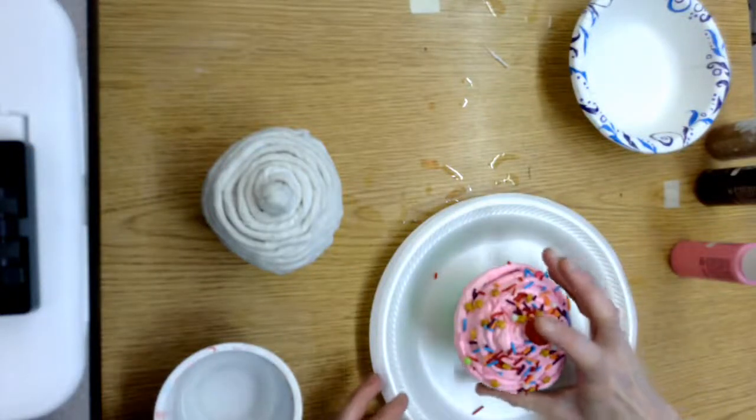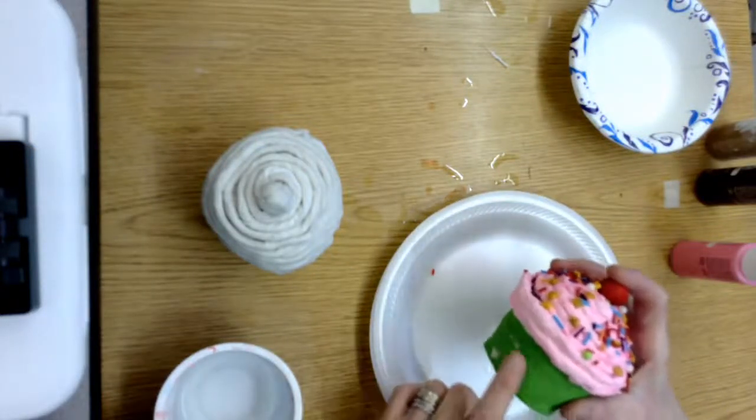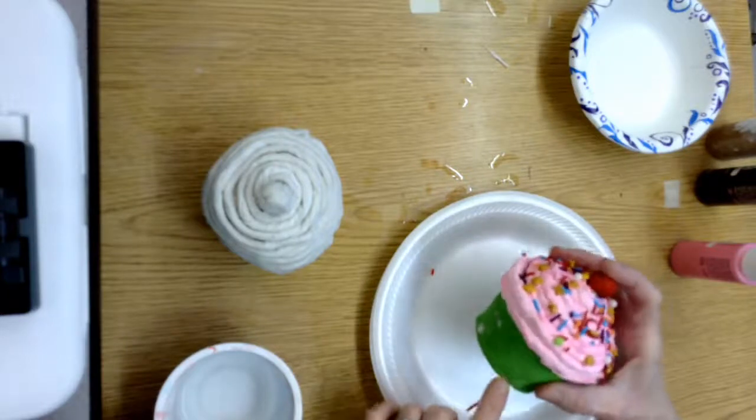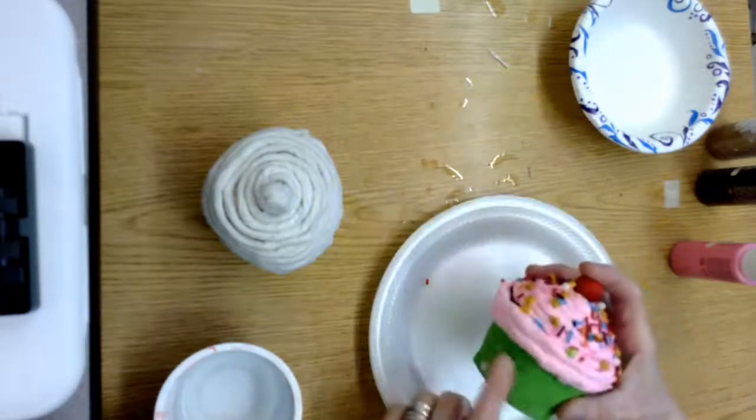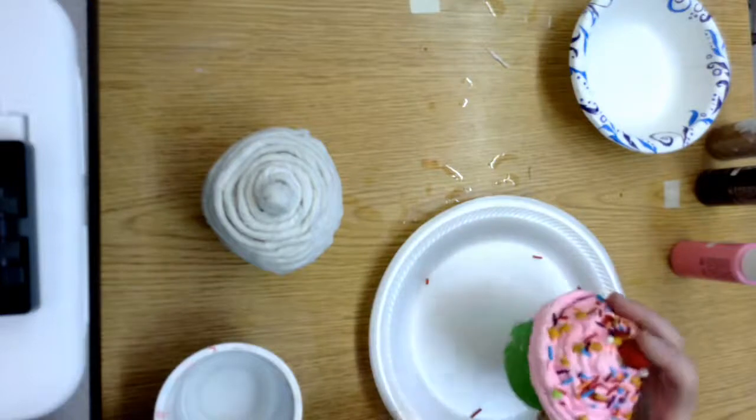Okay, the next step for making our cupcake is to do the plaster on the bottom to make it nice and sturdy. So that's the next part that we're gonna do.